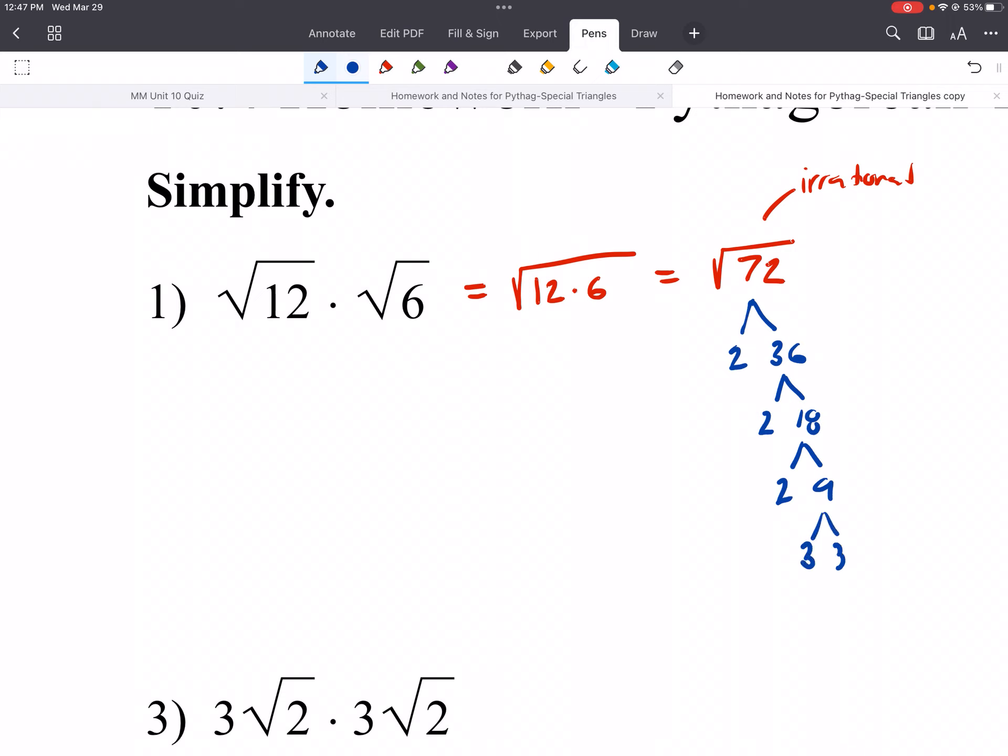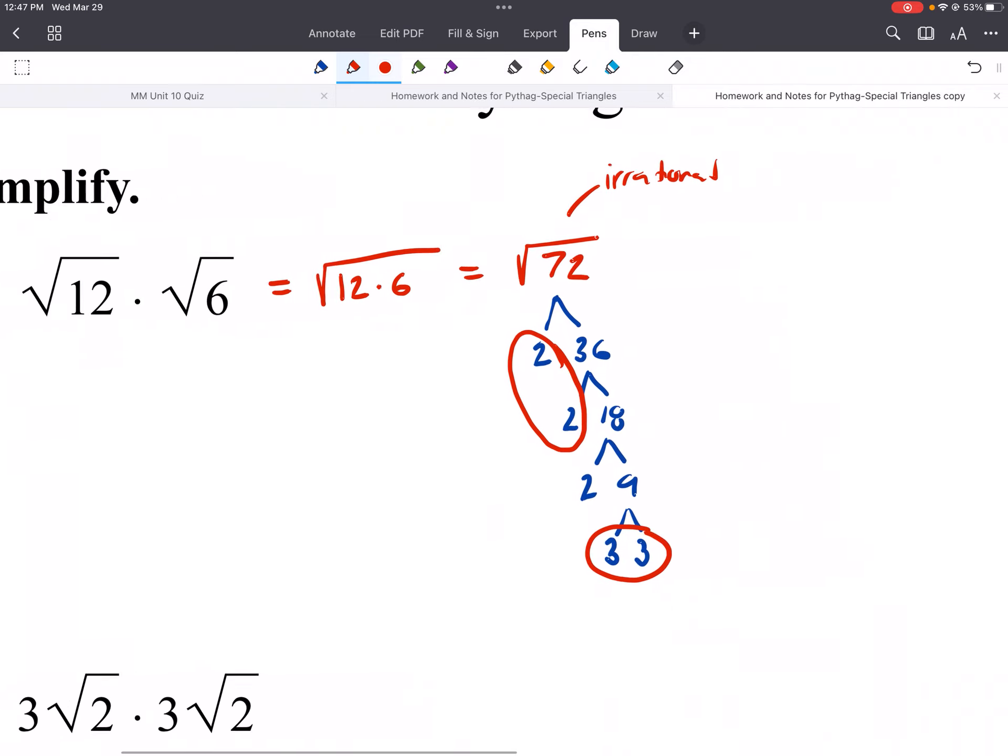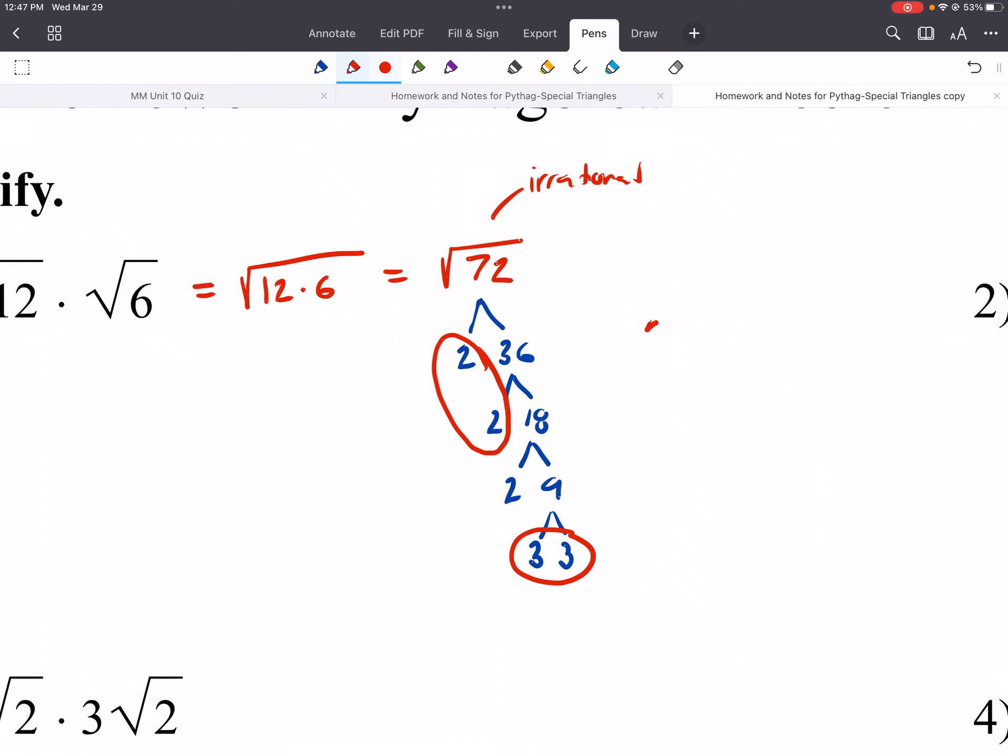And 3 and 3. And then we would circle groups. So here is a group of 2s. Here is a group of 3s. Those groups come out in the front. So we'd end up getting 2 times 3 square roots of what's not in a group. So the 2, that 2 that I underlined, is not in a group. So we'd end up getting 6 square roots of 2.